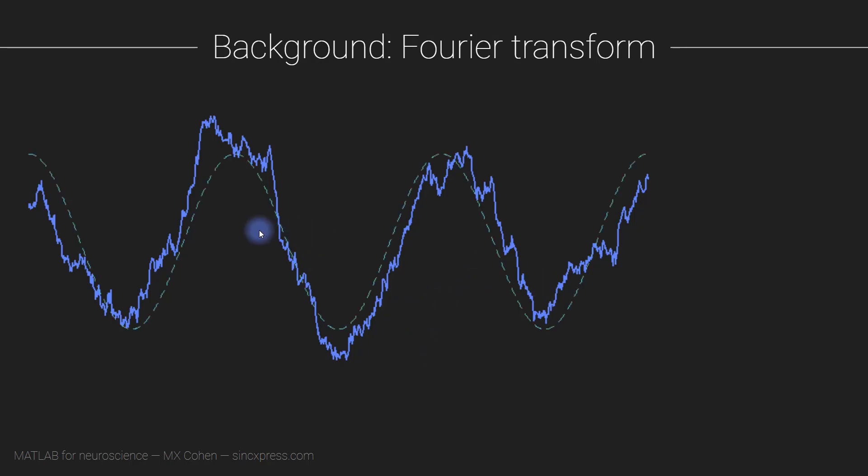And then we create a sine wave, which looks like this. We line up the sine wave with the data and we test how similar the sine wave is to the empirical signal. Now that measure of similarity is something called the dot product. And the dot product is also the computational backbone of the correlation coefficient.